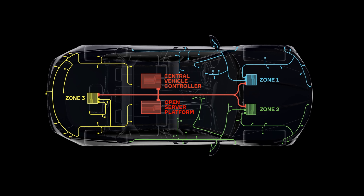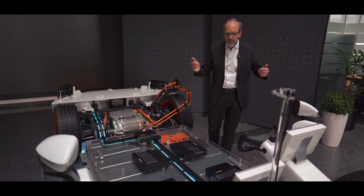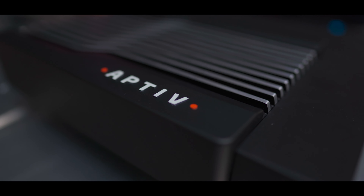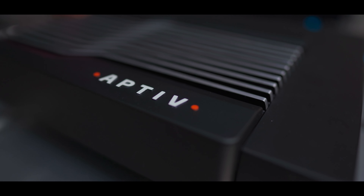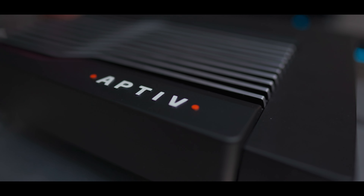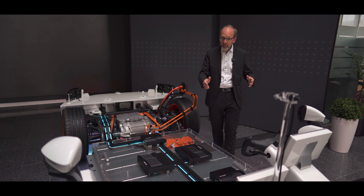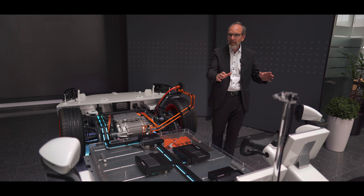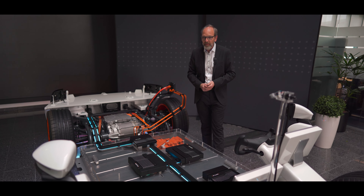So in this architecture, information from the front or the rear is collected by the zonal controllers, sent via the backbone to the central compute, where it is processed. The results are then sent back to the zonal controllers, which control the actuators and loads in the front and rear of the vehicle.